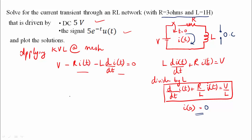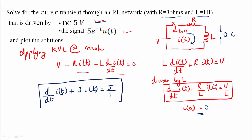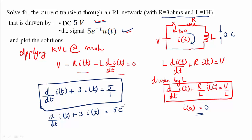The equation becomes d/dt of I of t plus R/L times I of t equal to V/L. With R equal to 3 ohms, L equal to 1 H, and V equal to 5V, we substitute: d/dt of I of t plus 3 times I of t equals 5, and the exponential input is 5 e raised to power minus 5t.